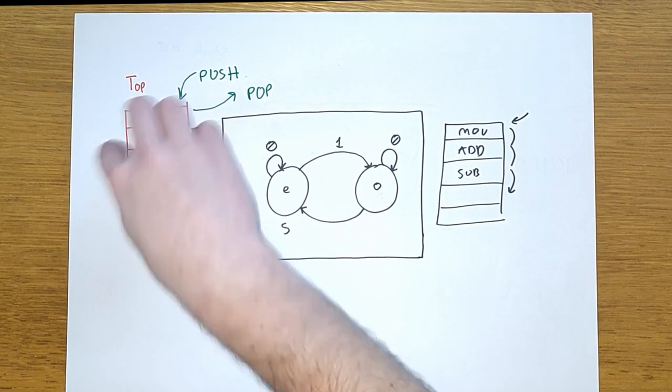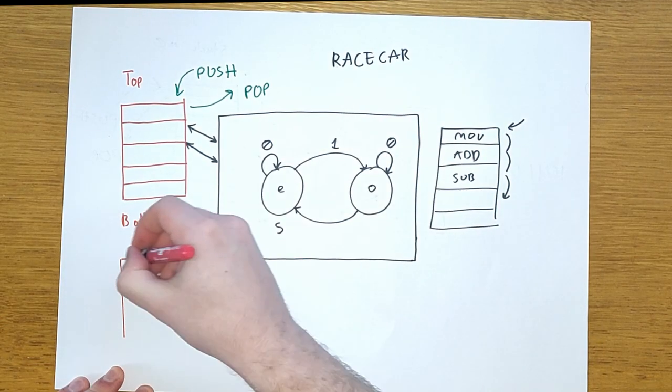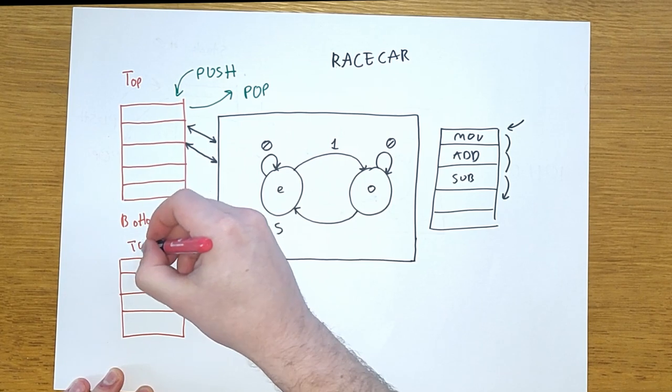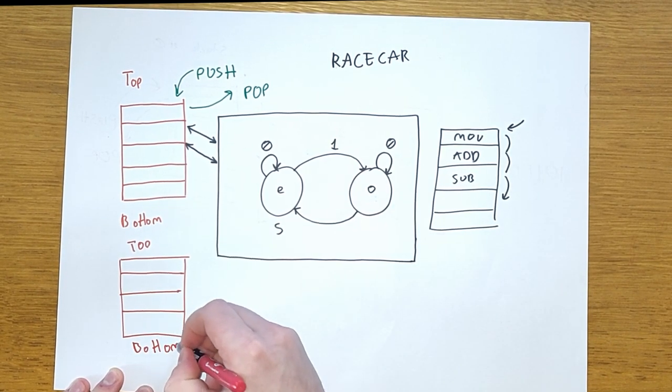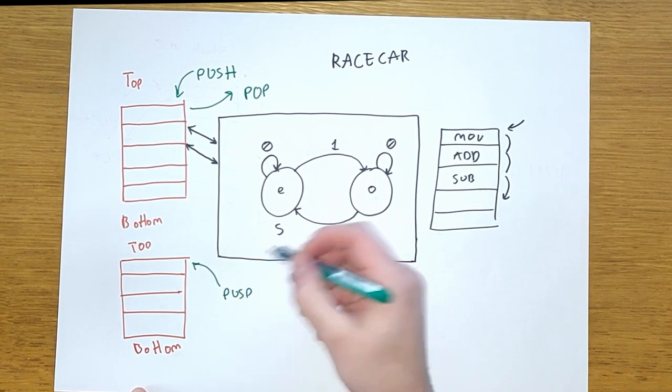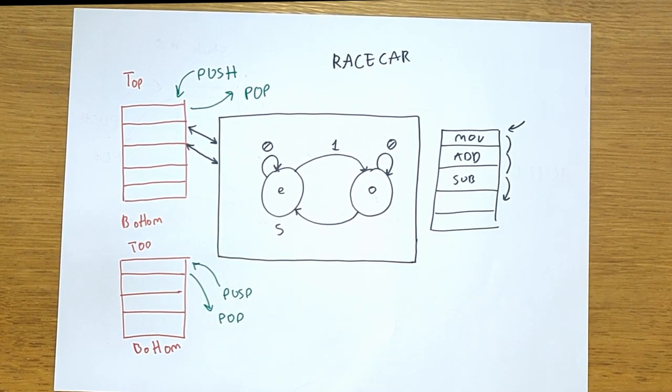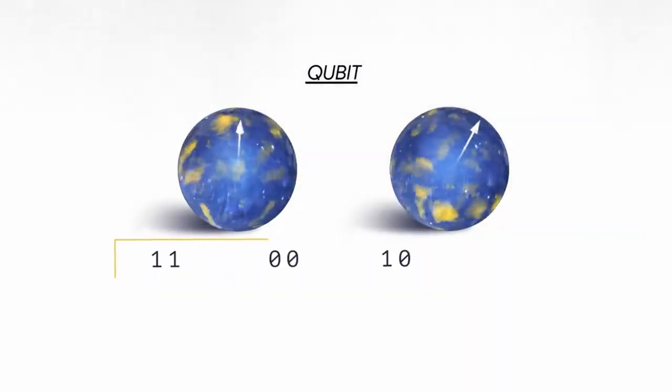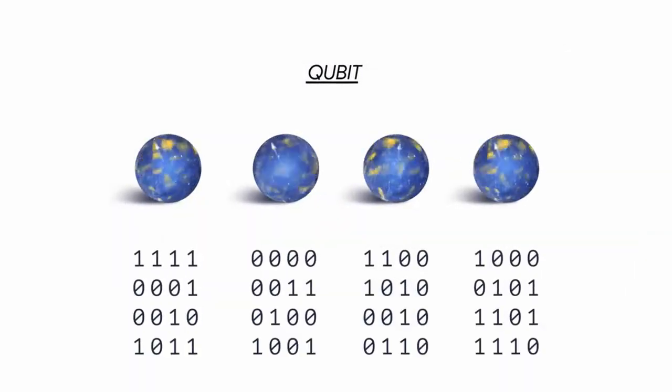This idea raises another question. Does adding another stack to make two stacks allow us to solve any more problems beyond that of a finite state machine and regular expression? As you can probably guess from the existence of palindrome checkers on the internet, the answer is yes. A finite state machine with two stacks is more powerful than one with a single stack.